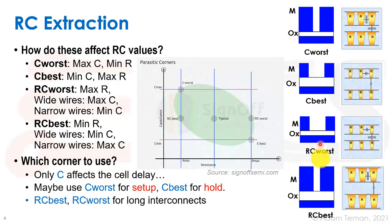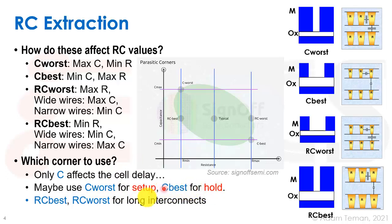Without a clear answer, the safest approach for sign-off is to take all available extraction corners and run timing analysis on all of them — though this multiplies the number of corners by four or five. For older technologies where C is dominant and R is low, C-worst for setup and C-best for hold was sufficient. But at nanometer nodes where wire resistance has increased significantly, RC-best and RC-worst corners should both be checked.